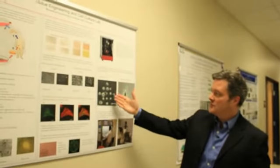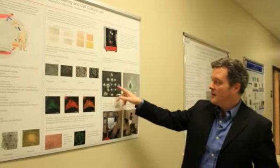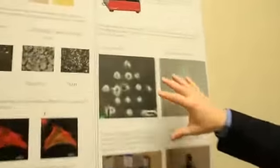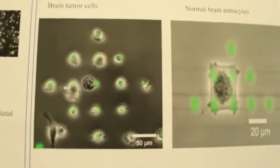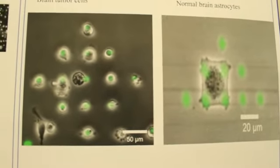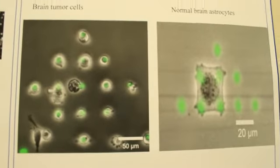On the left here, you see brain tumor cells, which are one on each dot. And this, as they grow, will let us interrogate how brain tumors grow and how they respond to cancer treatment.